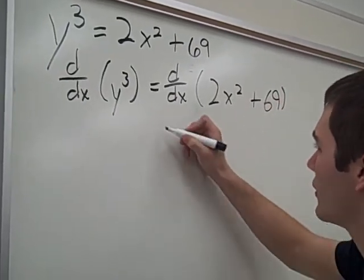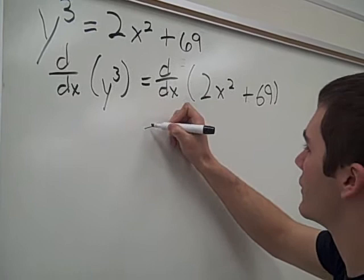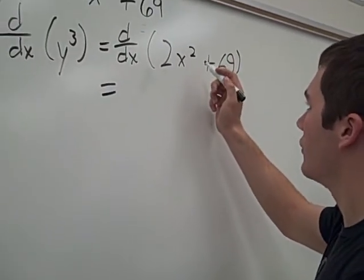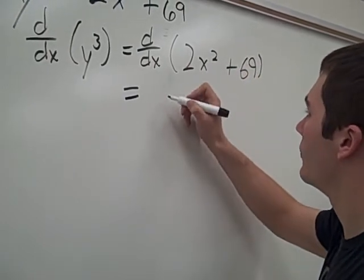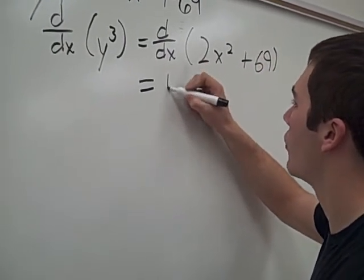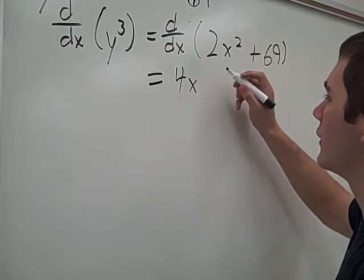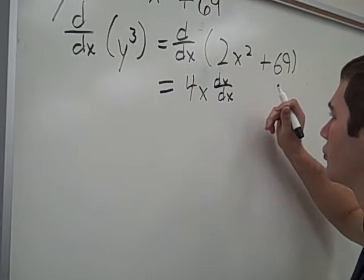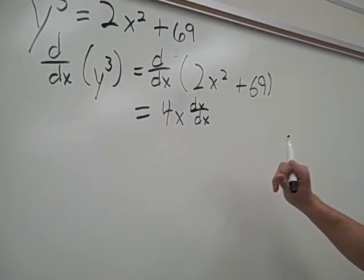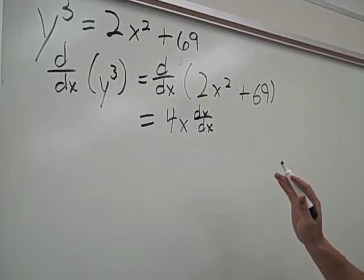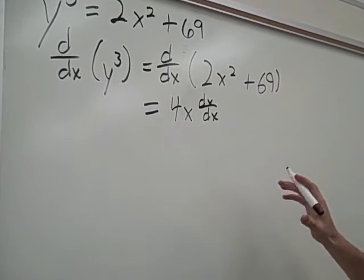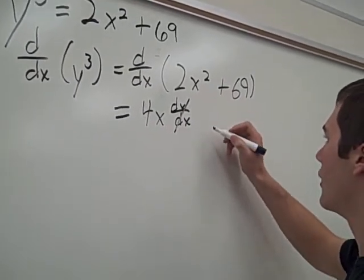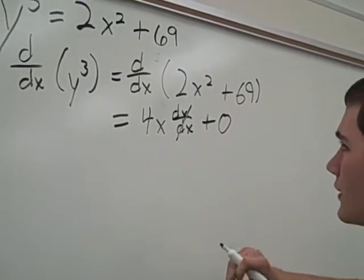Now, we'll start with the right side because that is a little more simple. The derivative of 2x squared is 4x, and here we're going to write dx over dx because that's the derivative you actually get, but you always skip writing it because it equals 1. So we can just cross it out, plus 0, the derivative of 69.